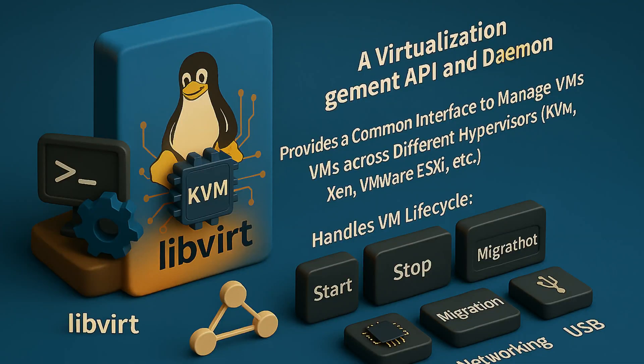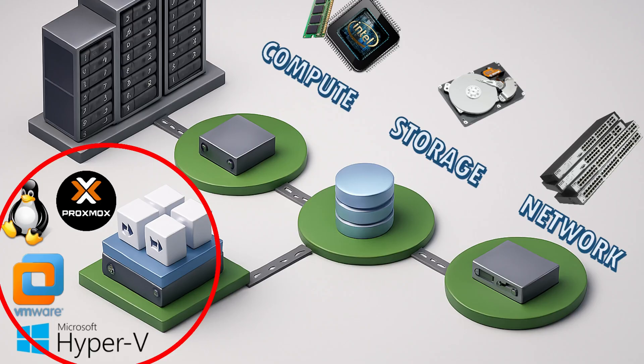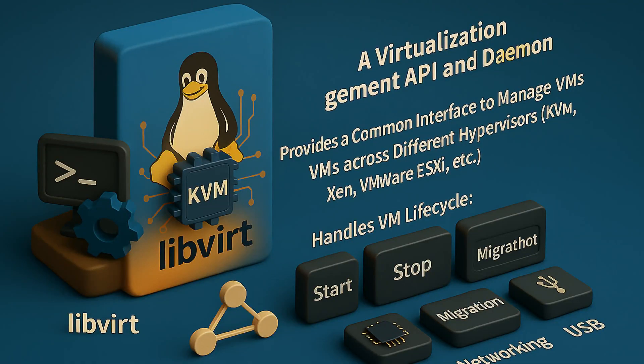The third component is libvirt API plus daemon. We need an application that provides APIs through which we can configure our virtualization components — like compute, network, storage, and protocols. Similarly, we need daemon services that this component provides. With libvirt API plus daemon services, we can manage integration and handle service start, restart, and stop operations.